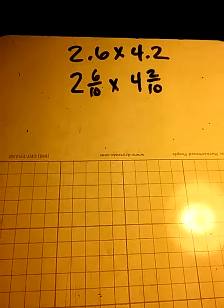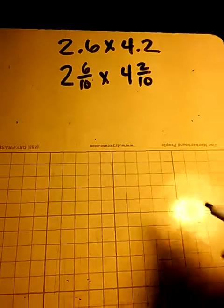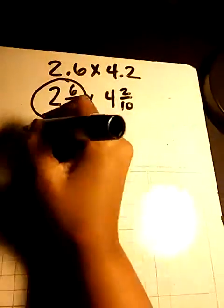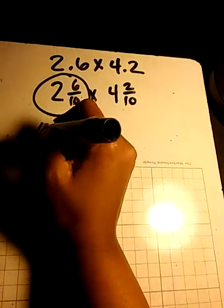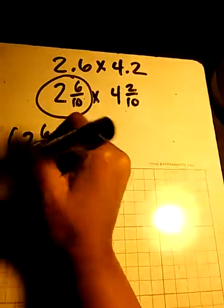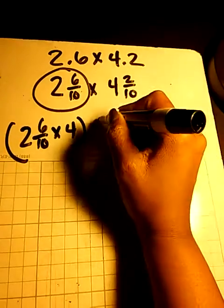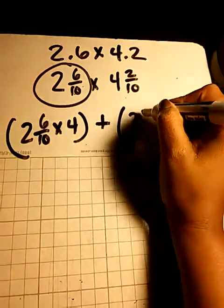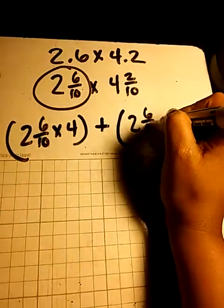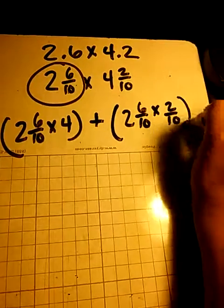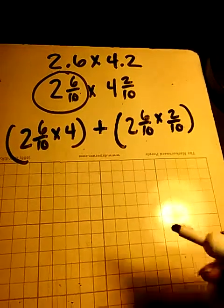We also need our knowledge of the distributive property. We can take the entire first factor, 2 and 6 tenths, times 4, plus 2 and 6 tenths times 2 tenths.